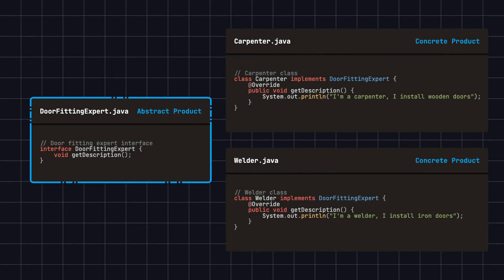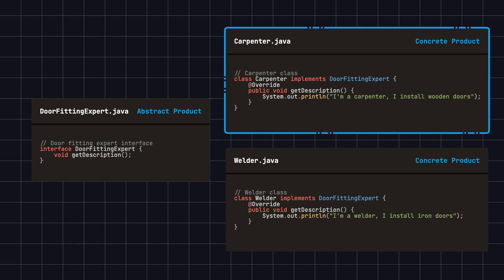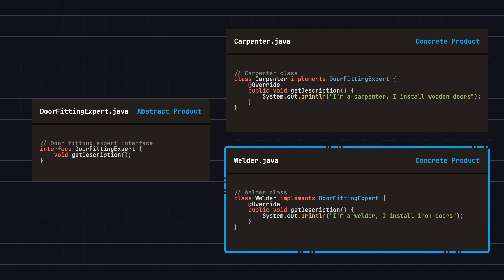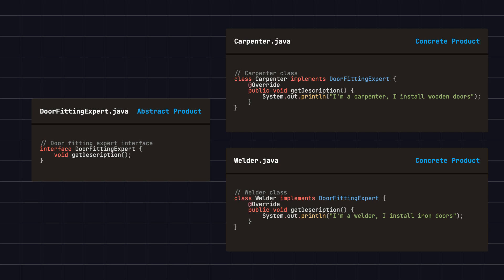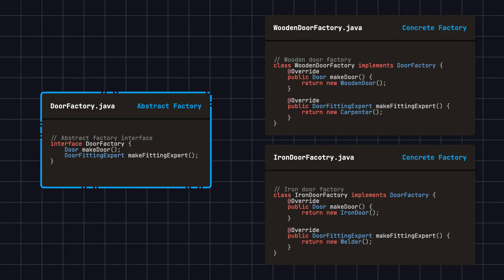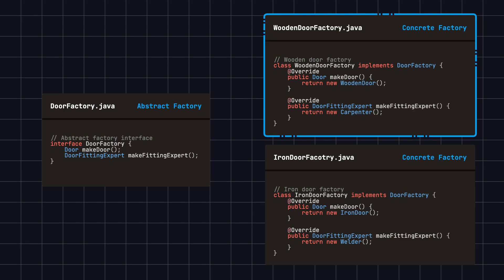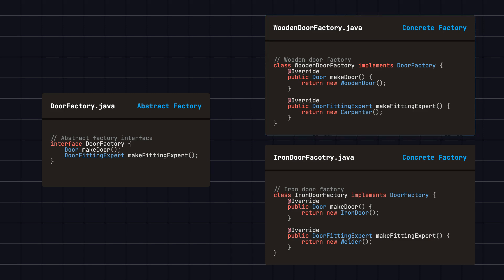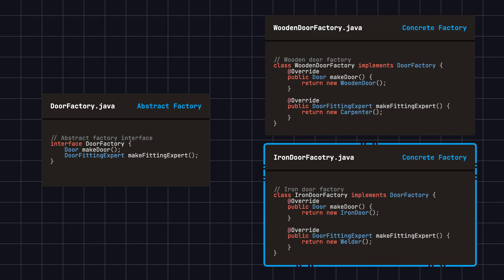Next, we define a door fitting expert interface representing the professionals who install the doors. We then implement two concrete specialists: carpenter, who installs wooden doors, and welder, who installs iron doors. In the UML class diagram, door fitting expert is also an abstract product and carpenter and welder are the concrete products. Then we define an abstract factory interface door factory and two concrete factory classes: wooden door factory, which creates wooden door and carpenter, and iron door factory, which creates iron door and welder.